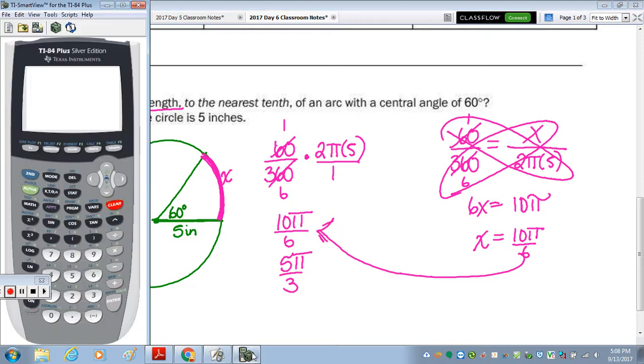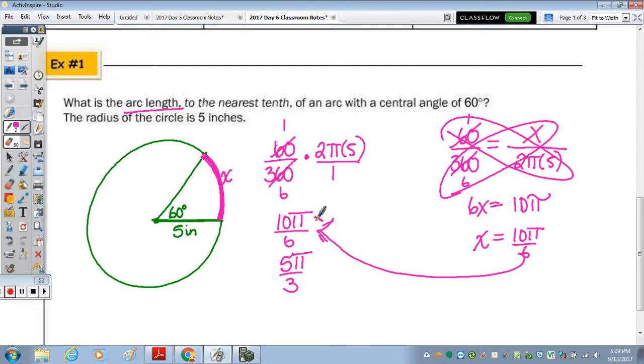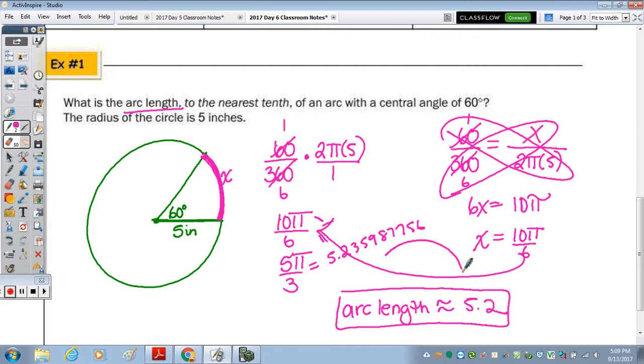So when we type 5 pi over 3, we get 5.235 dot, dot, dot. It's irrational. We're rounding to the nearest tenth, so it would be approximately, what is the arc length? The arc length is approximately 5.2. Now on your state test, you would want to show that this decimal is 5.235987756, so we can at least get you a point if you make a rounding error.